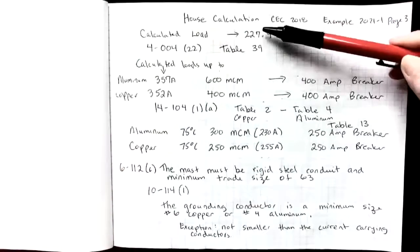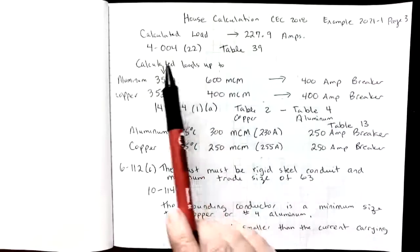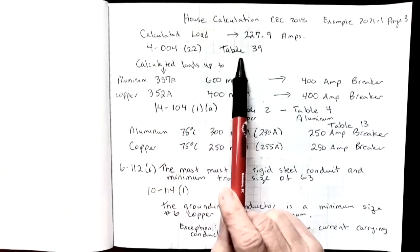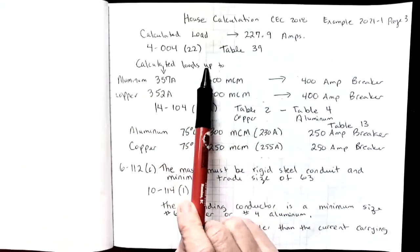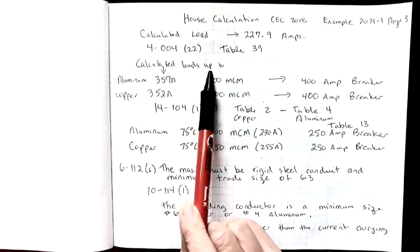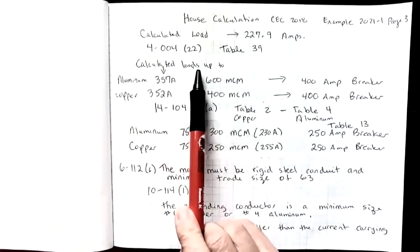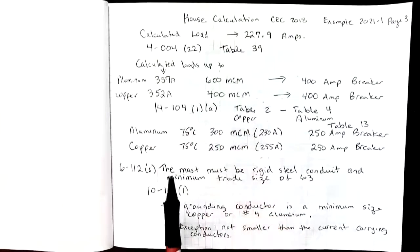Our calculated load at 227.9 amps. We can go using rule 4-004 sub rule 22. We can go to table 39. Use that calculated load to try to find our wire and breaker size. Now I want to also mention that sometimes table 39 gives us a larger number than what would be the minimum. So we're always going to compare the results of table 39 with the results of table 2 or 4 and table 13. And I'll get to those in a minute.